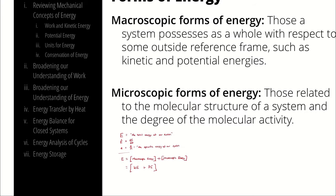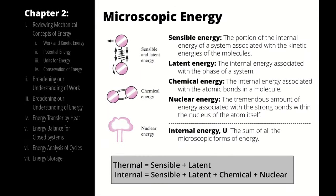When we consider microscopic energy, we consider four different types. Sensible energy is the portion of internal energy associated with the kinetic energies of the molecules — a fancy way of saying it's the energy associated with temperature. It's named that because it was sensible, or perceptible, to people; that sensible energy increase manifests as an increase in temperature. Latent energy is the internal energy associated with the phase of a system.